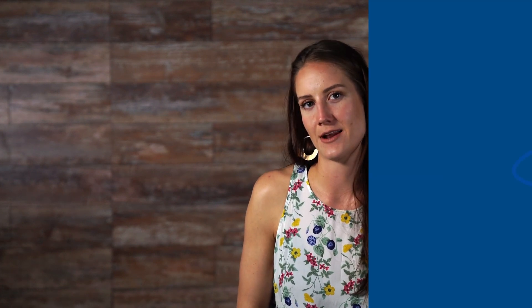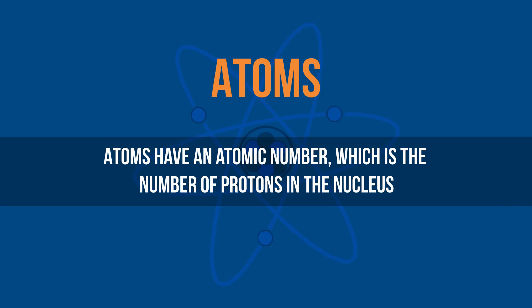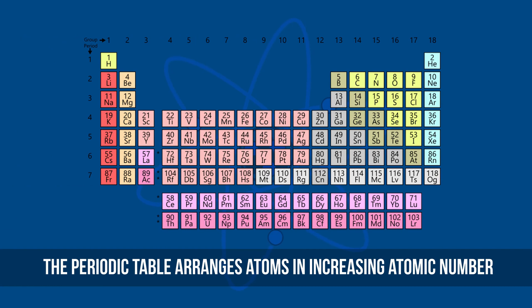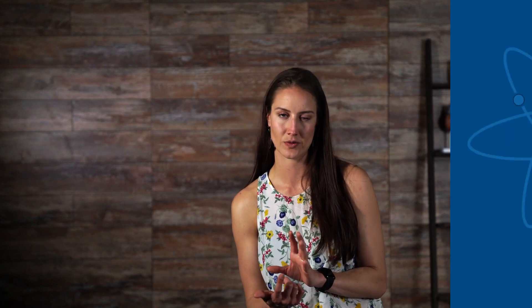Now that we have talked about the different parts of the atom, let's summarize a few properties of atoms. Atoms have an atomic number, which is the number of protons in the nucleus. The periodic table arranges atoms in increasing atomic number. The charge of an atom is calculated based on the difference between the number of protons in the nucleus and the number of electrons orbiting the nucleus.